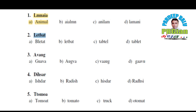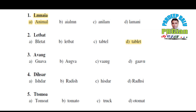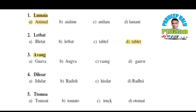Now let's see the second point: L E T B A T. What will it form? Yes, right — Tablet! What will it form? Tablet. Third point: A V A U G. What will it form? Yes, you are right — Option A — Guava.